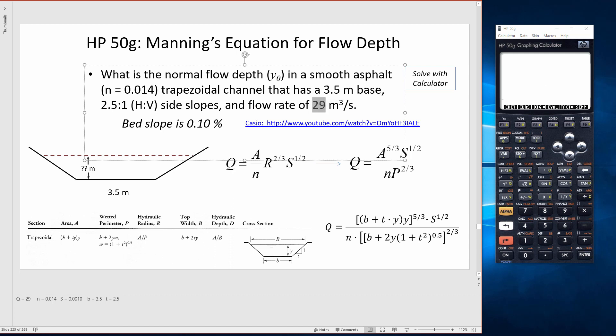There are a number of parameters defined in the problem statement: flow of 29, slope 0.1%, side slopes 2.5 units of horizontal distance to every one unit of vertical distance, the base width, and this is concrete with an n value of 0.014. So here I've identified the variables that are going to go into the solver.